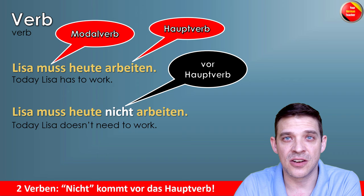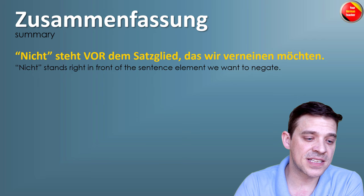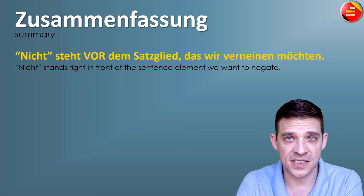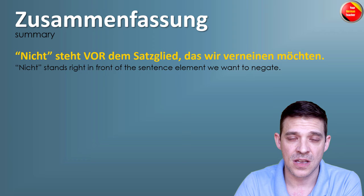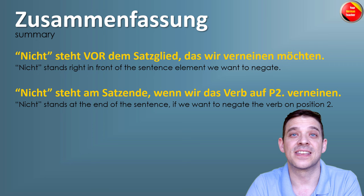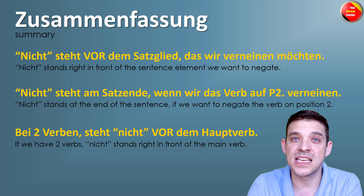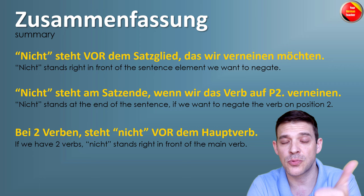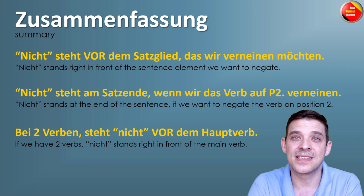Zusammenfassung — let's do a quick summary. Number 1: NICHT steht vor dem Satzglied, das wir verneinen möchten — NICHT stands always in front of the sentence element which we want to negate. Number 2: if the main verb is on position 2, you have to put NICHT at the end of the sentence. Number 3: bei zwei Verben — if you have two verbs, such as in present perfect or with modal verbs, then you have to put NICHT right in front of the main verb at the end of the sentence.